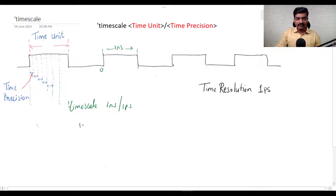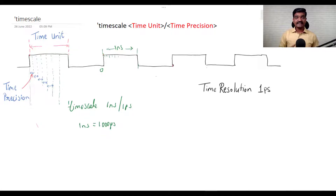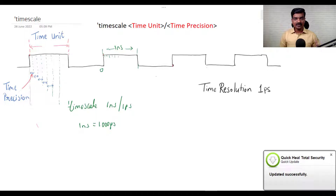1 nanosecond is 1000 picoseconds, so you will have 1000 in-between values that you can represent within your time. This is what the timescale represents. Let's write a short code to understand the impact of this timescale on your generated clock.